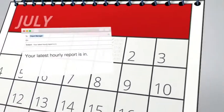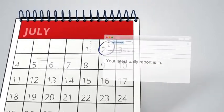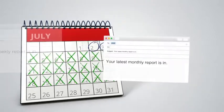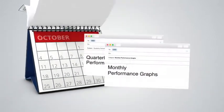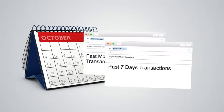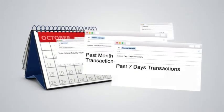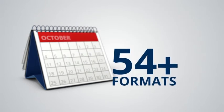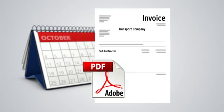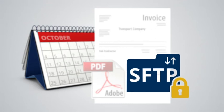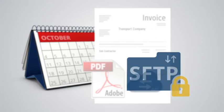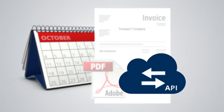Automated hourly, daily, weekly or monthly reports, graphs and exports are sent to all areas of your business. Exports and PDF invoices can be sent via email, SFTP or use our API functionality.